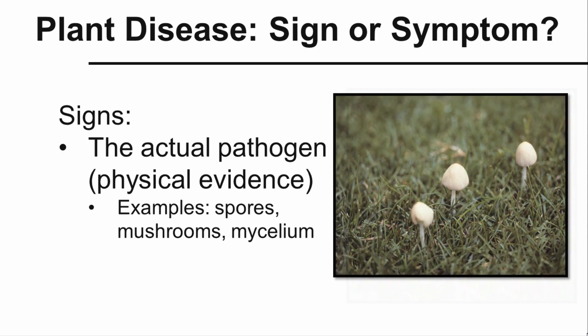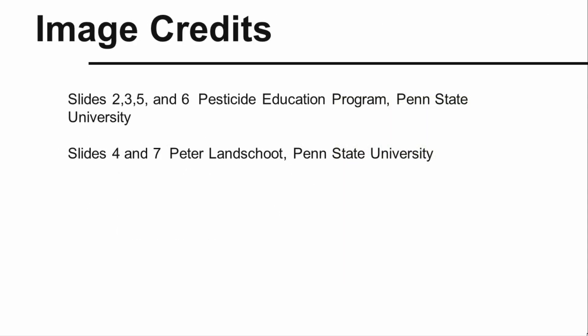We also see mushrooms — this happens to be fairy ring on turf grass. The fungus is growing in the soil, but it produces these fruiting bodies. These mushrooms are actual physical evidence of the pathogen. Hopefully this short video helps you understand the difference between signs and symptoms. Again, it's very valuable in understanding what disease you're dealing with. Thank you.